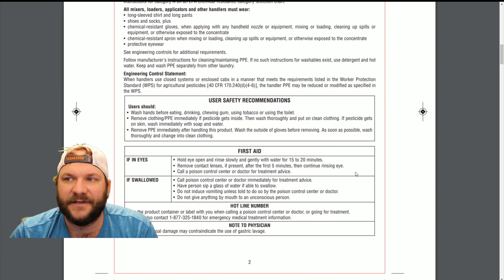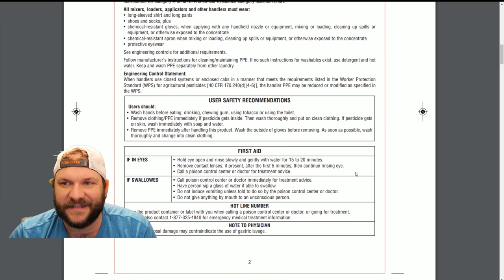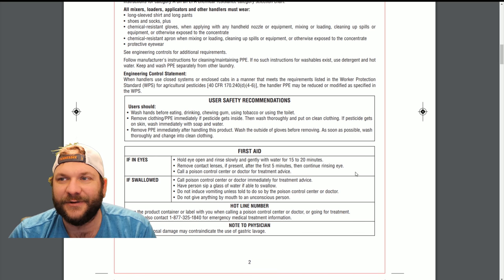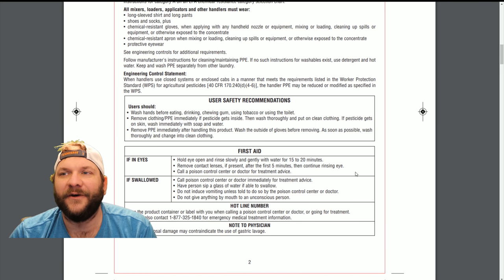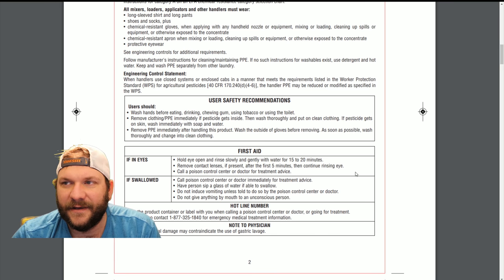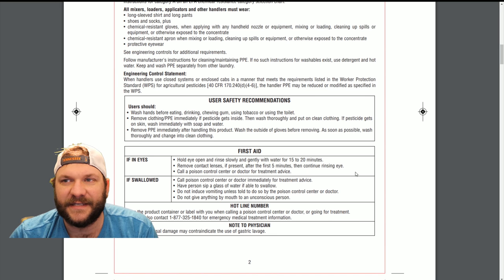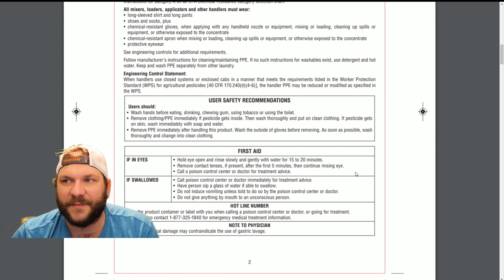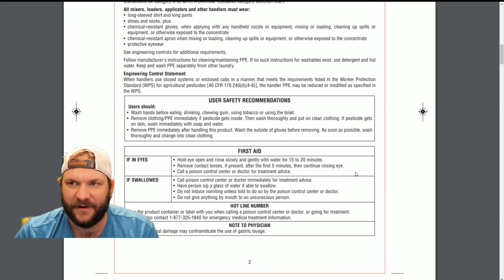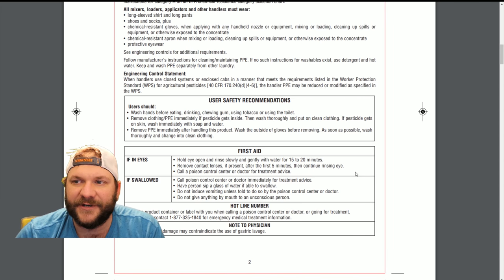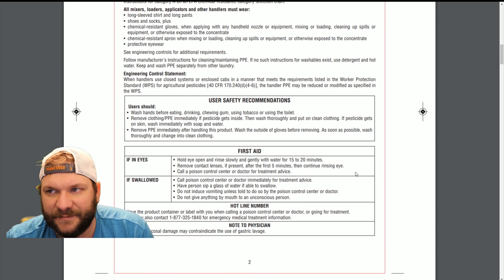Safety recommendations — I think this is good for pretty much any herbicide out there. Wash your hands before eating, drinking, chewing gum, using tobacco, or using the toilet. If this product gets inside clothing, remove it. Same with your PPE. Wash thoroughly if it gets on skin. Wash immediately and remove PPE immediately after handling this product. Wash your gloves after handling the product — simple, basic, but important things to follow.